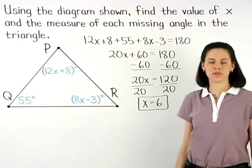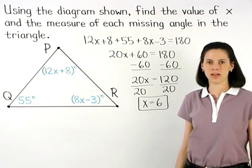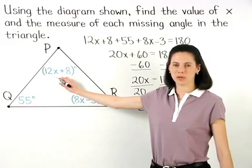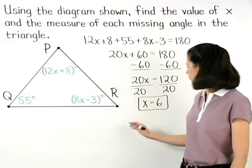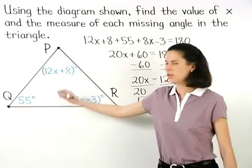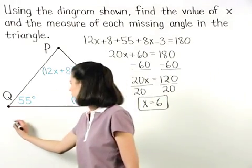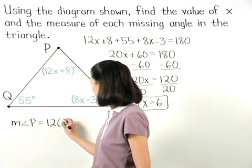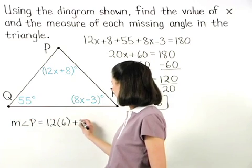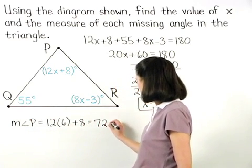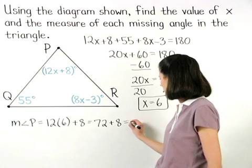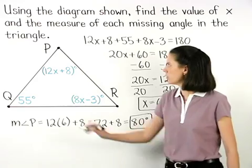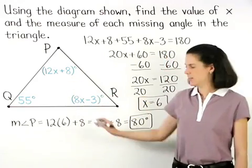Now to find the measures of each missing angle in the triangle, remember that the measure of angle P is 12x plus 8. If we plug 6 in for x, then we have for the measure of angle P: 12 times 6 plus 8, which is 72 plus 8, or 80 degrees.